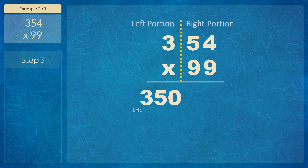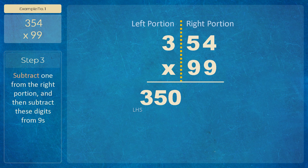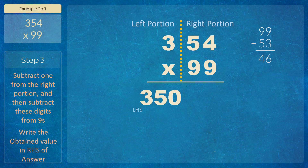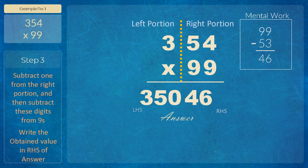Now Step 3: after solving the LHS, find the right-hand side of the answer. Subtract 1 from the right portion of the first number. The right portion here is 54; subtract 1 to get 53. Now subtract these digits 5 and 3 from 9s: the answer is 46. This is your RHS. So write 46 there — the final answer is 35046.